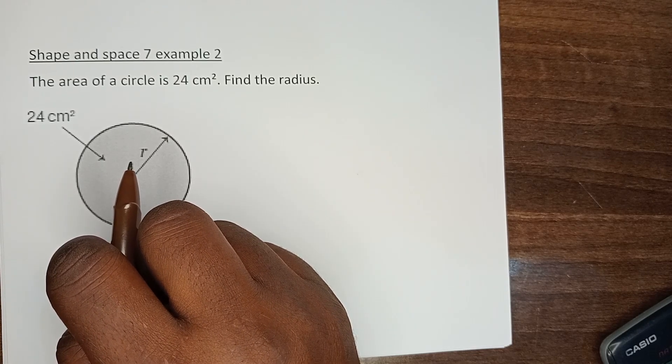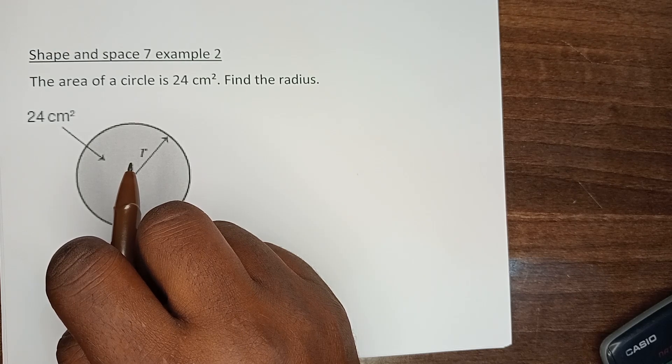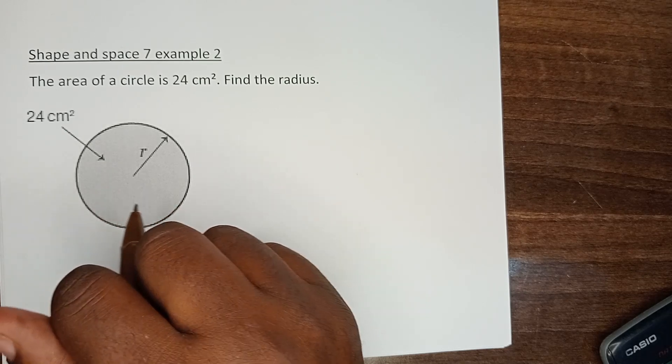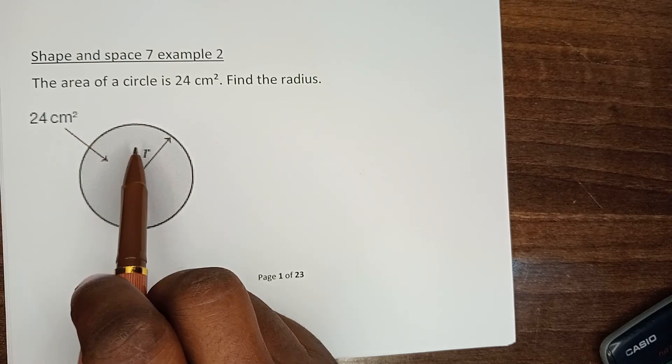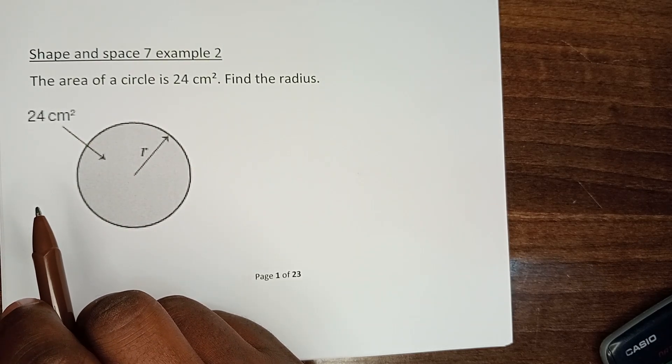Shape and space 7 example 2. The area of a circle is 24 centimeters squared. Find the radius. We have a circle here whose area is 24 centimeters squared, and we are expected to find the radius.